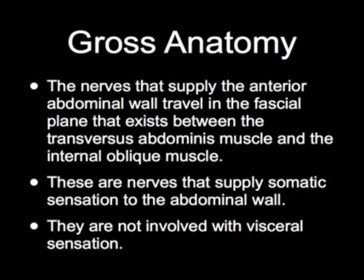The nerves that supply the anterior abdominal wall travel in the fascial plane that exists between the transversus abdominus muscle and the internal oblique muscle. These are the nerves that supply somatic sensation to the abdominal wall. They are not involved with visceral sensation.